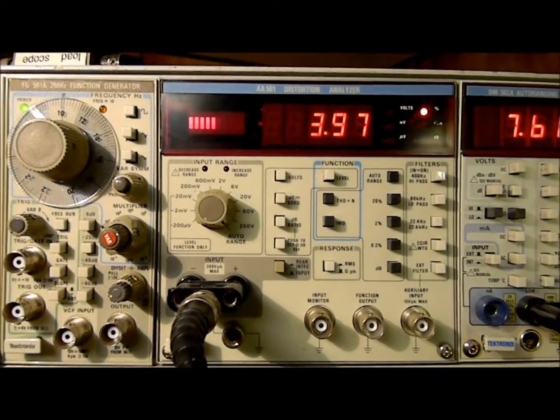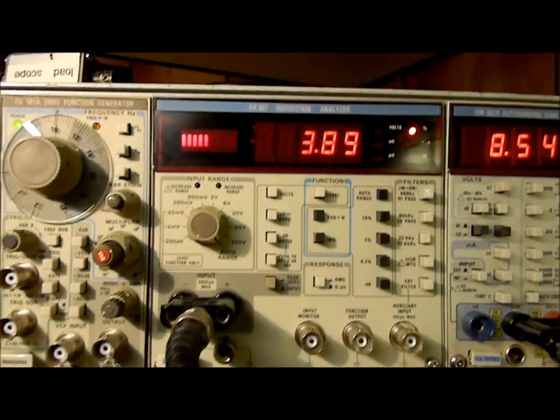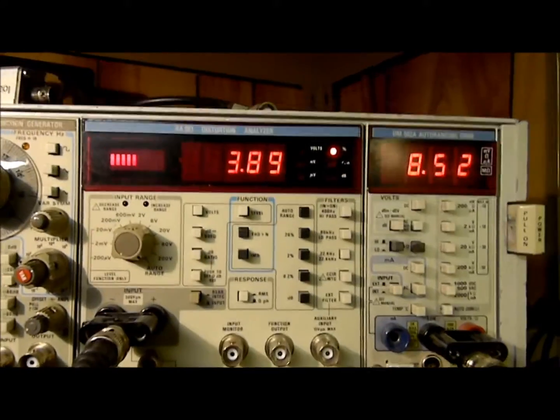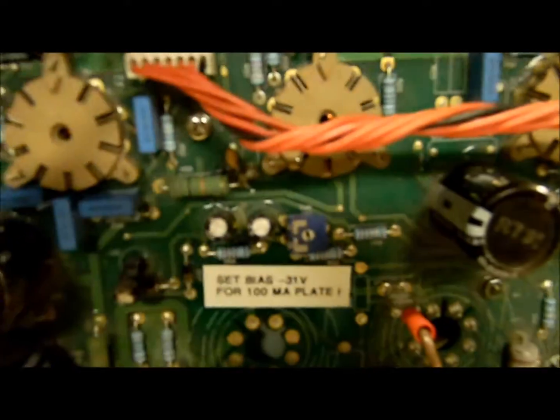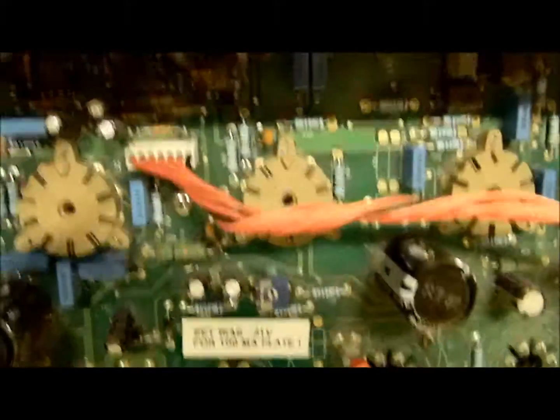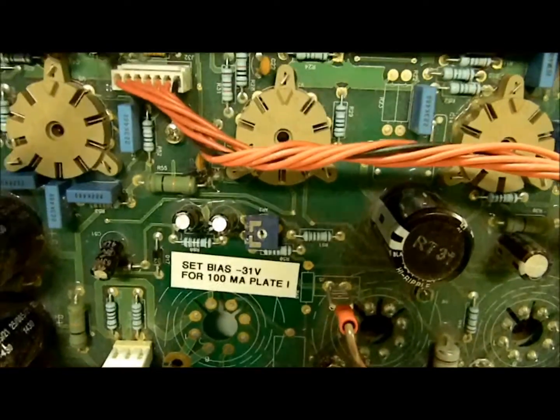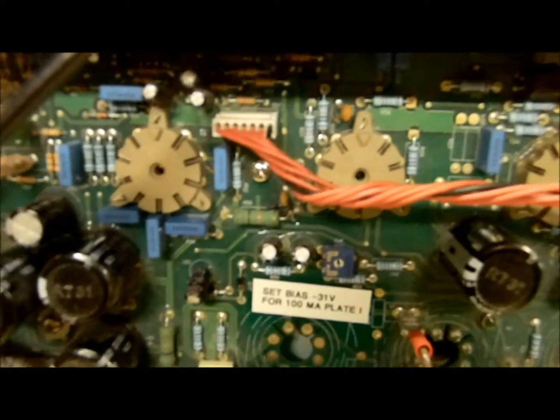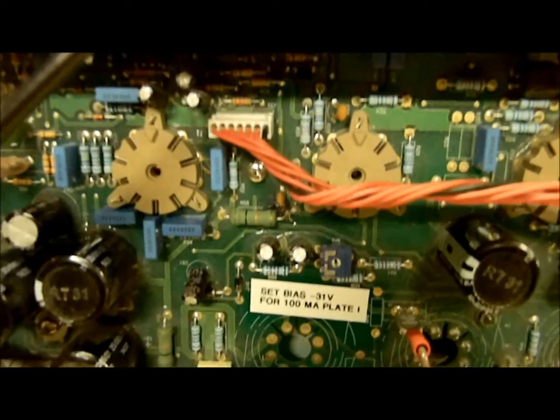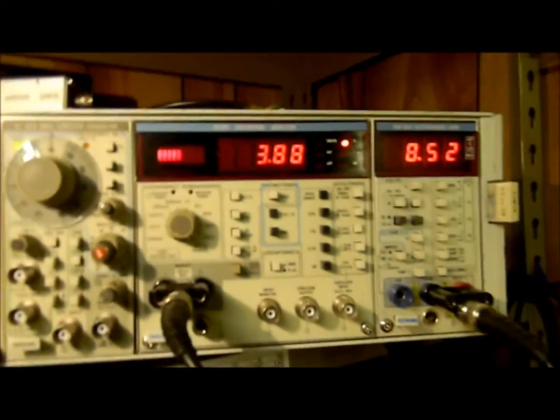So running it at 18 watts, half power, we want to make a bias adjustment so we get the lowest amount of distortion, and that's what we've set it at. It has not moved significantly, so without lengthening the video unduly, I believe we can pretty well conclude that the bias voltage set for 100 milliamps for the pair, 50 milliamps per tube, is the right point to get the lowest amount of distortion. So there you go, hope this helps.